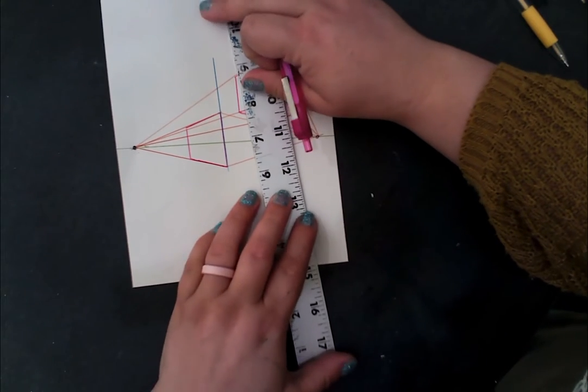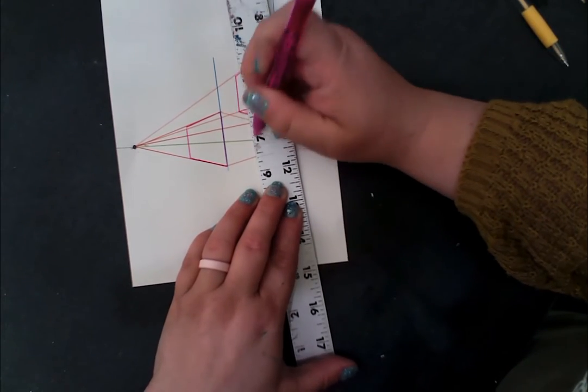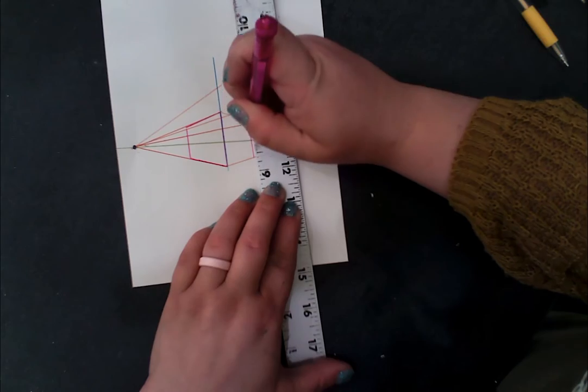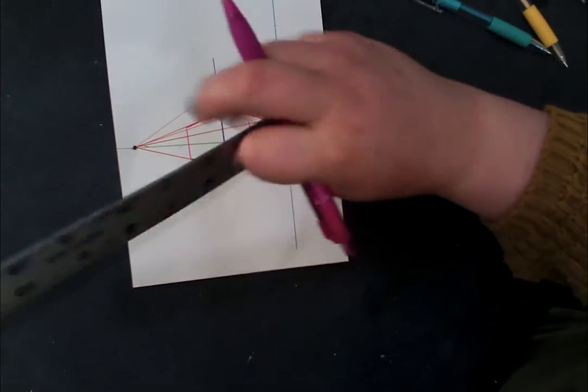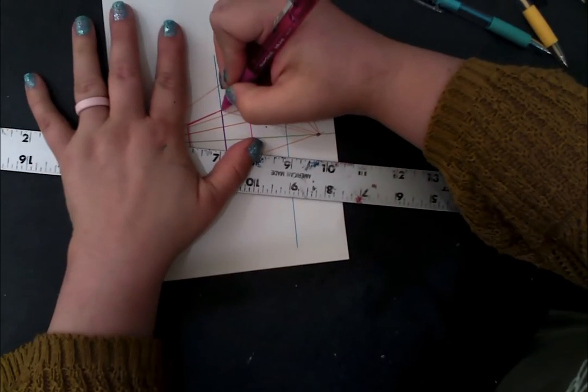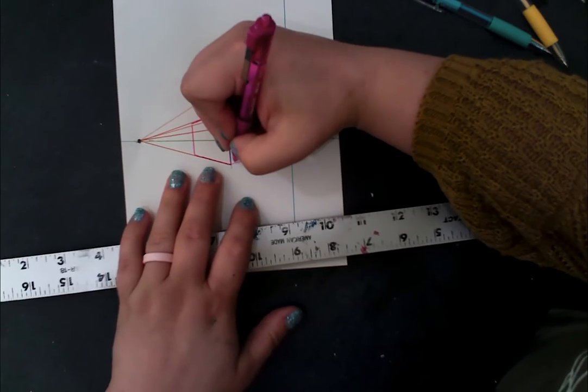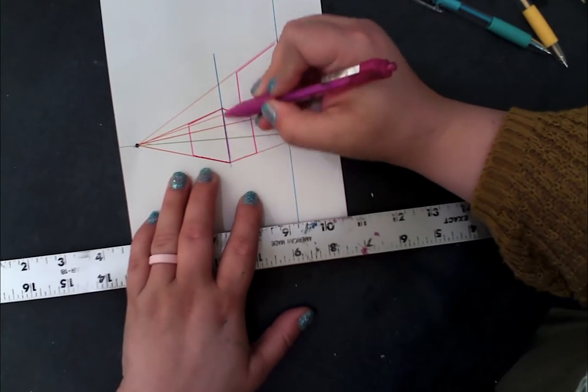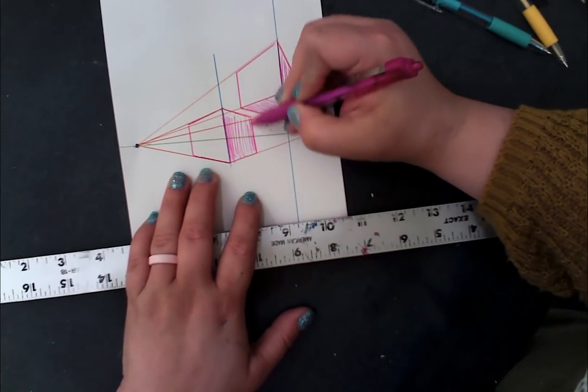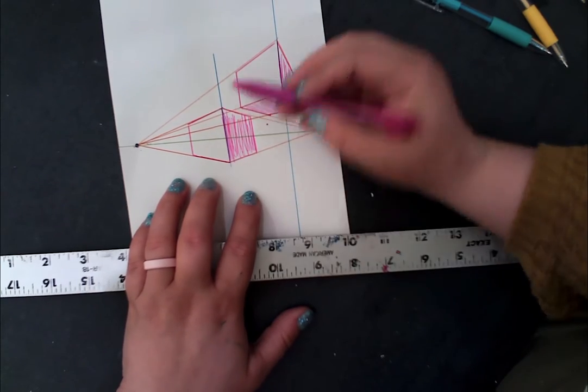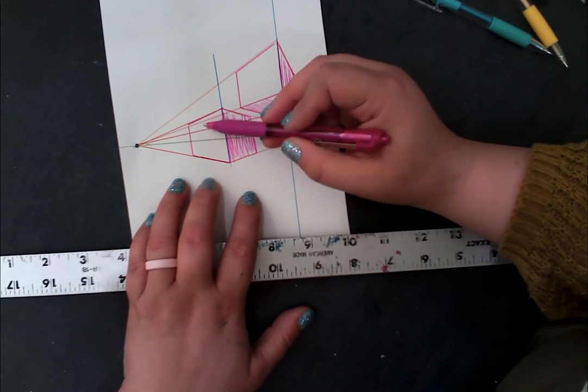Using my pink pen, make a parallel line and face. So I have my right side, can't see the bottom, can't see the top, left side.